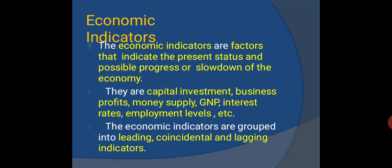Economic indicators are factors that indicate the present status and possible progress or slowdown of the economy. They include capital investment, business profits, money supply, GNP, interest rates, and employment levels. Economic indicators are grouped into three categories: leading indicators, coincidental indicators, and lagging indicators.